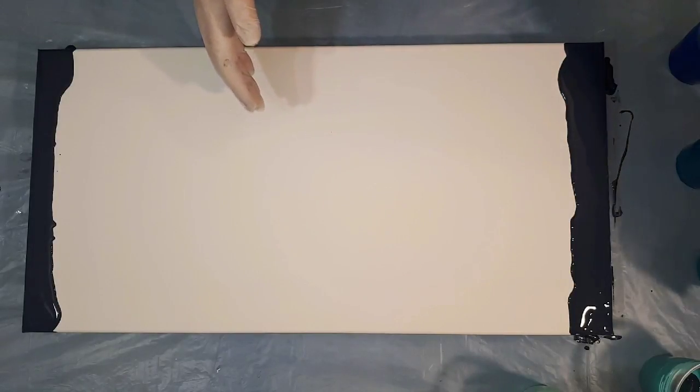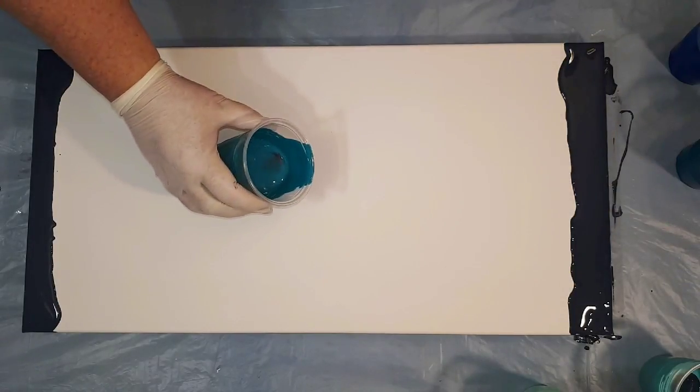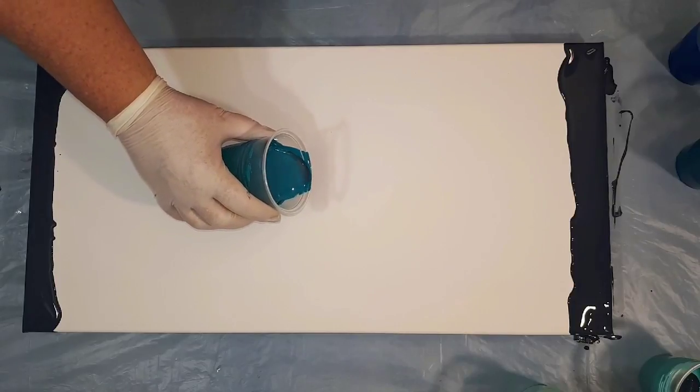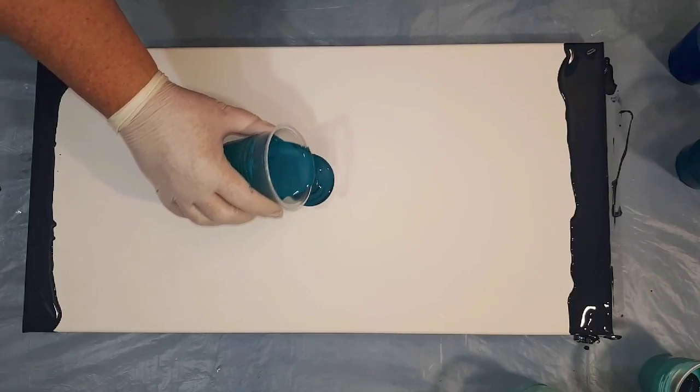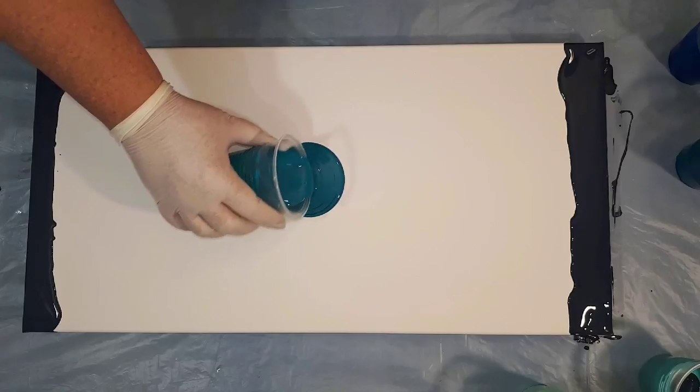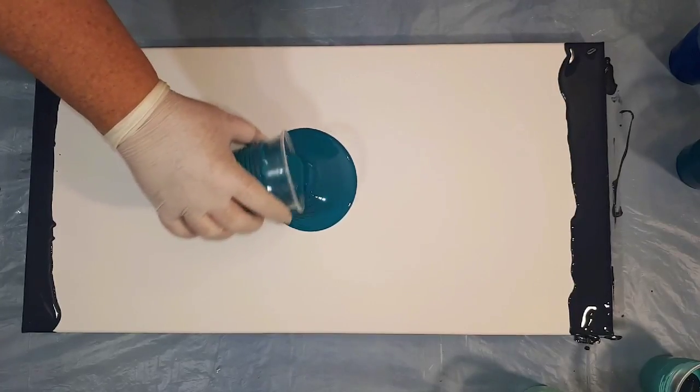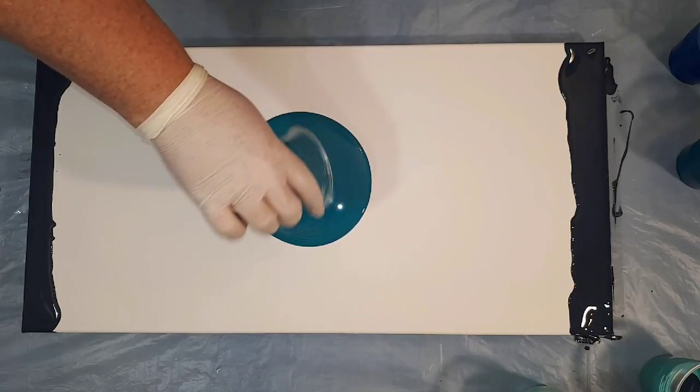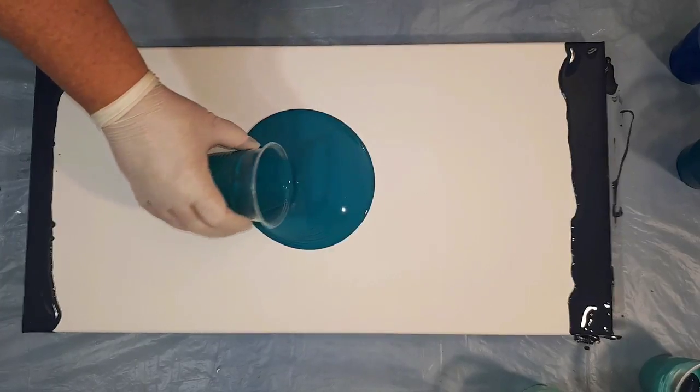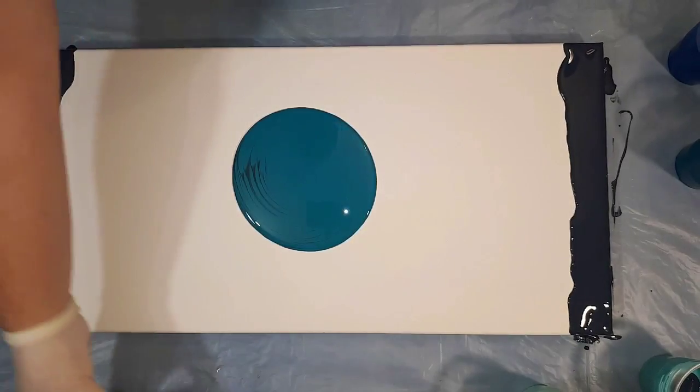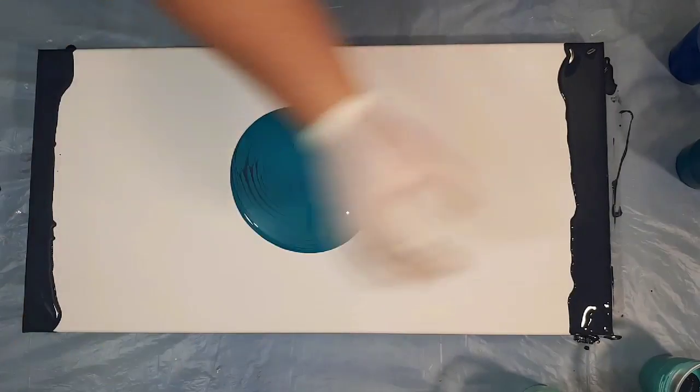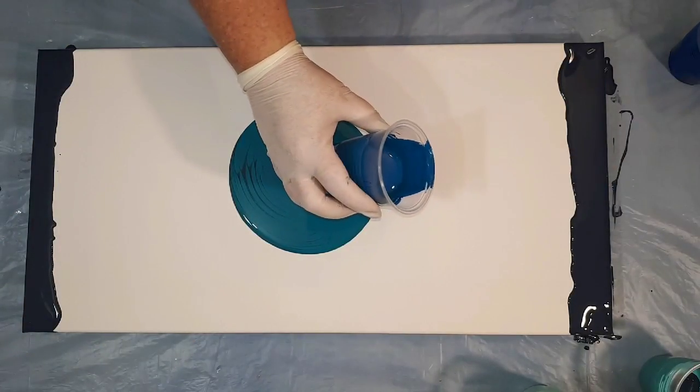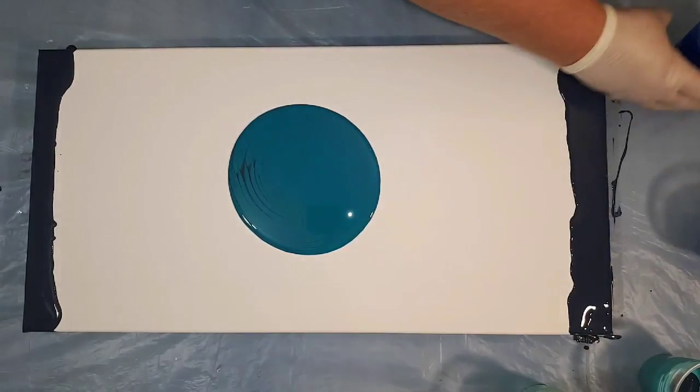So here I'm just finding the approximate center of the canvas and starting the swirl technique using the middle color. What I discovered, as you can see, is that you can't see a lot of that dark navy in there.